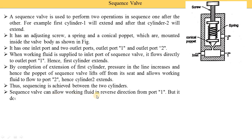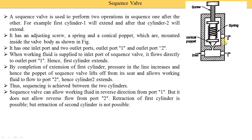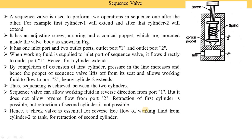The sequence valve can allow working fluid in reverse direction from port one — during retraction, oil comes back from the cylinder to the inlet port. But it does not allow reverse flow from port two. So retraction of the first cylinder is possible, but retraction of the second cylinder is not possible with a simple sequence valve. When oil comes back during retraction, the poppet is seated and the oil cannot go back through port two. To solve this, we need to add a check valve. Hence a check valve is essential for the reverse free flow of working fluid from cylinder two to the tank for retraction of the second cylinder.